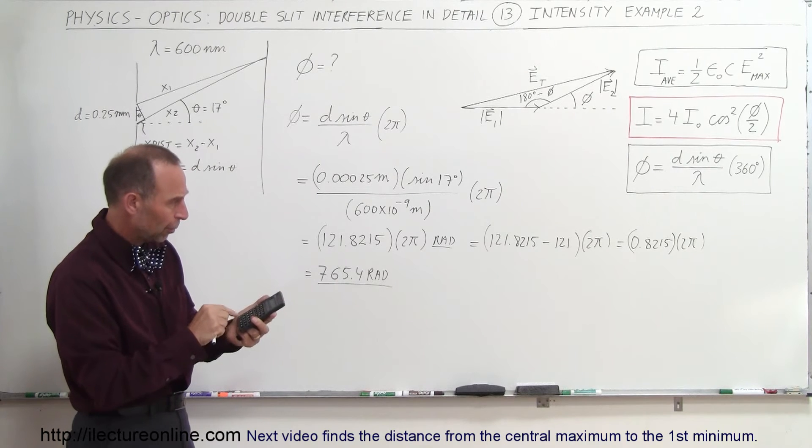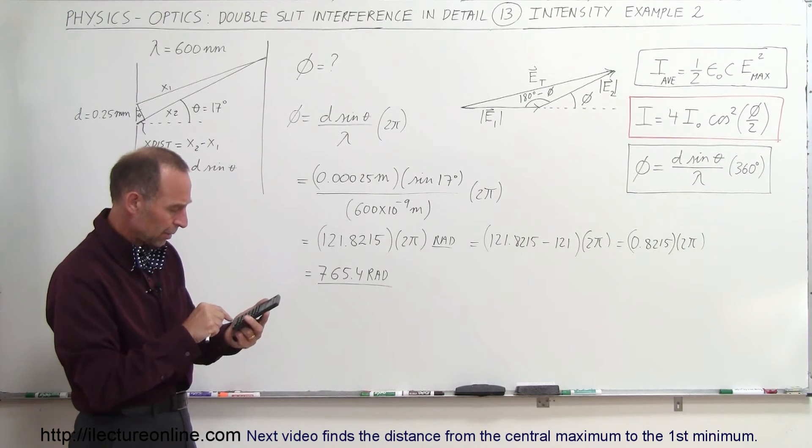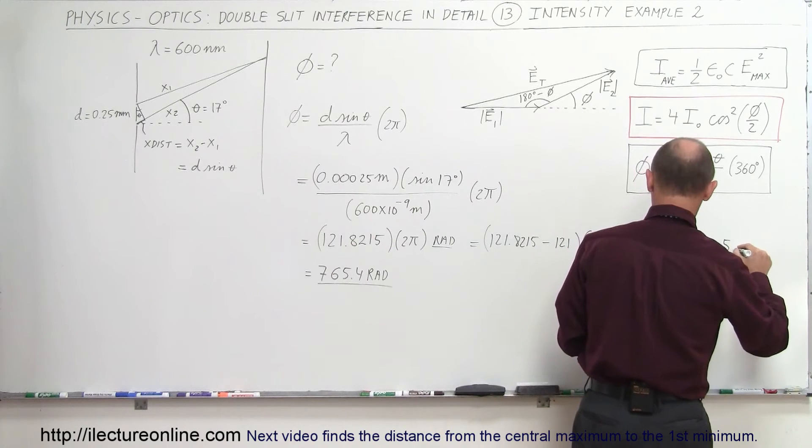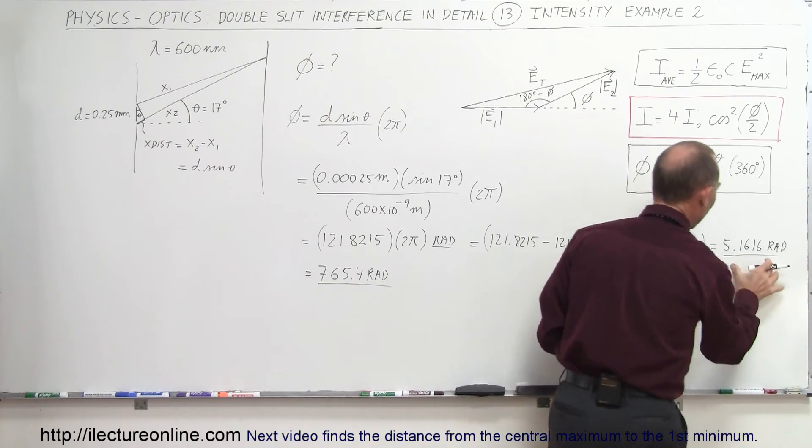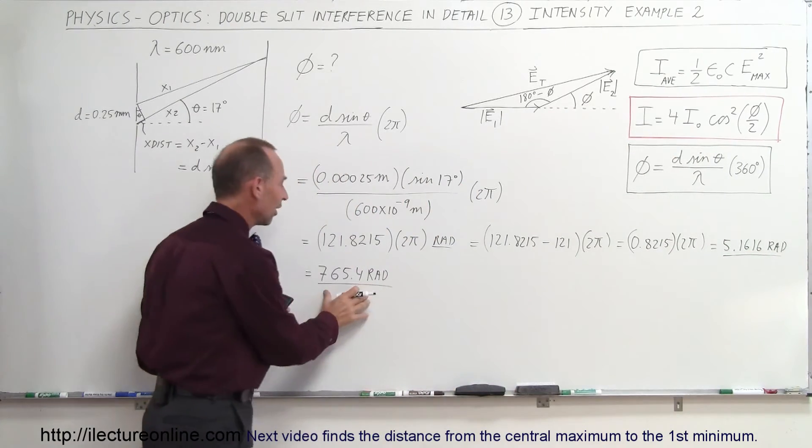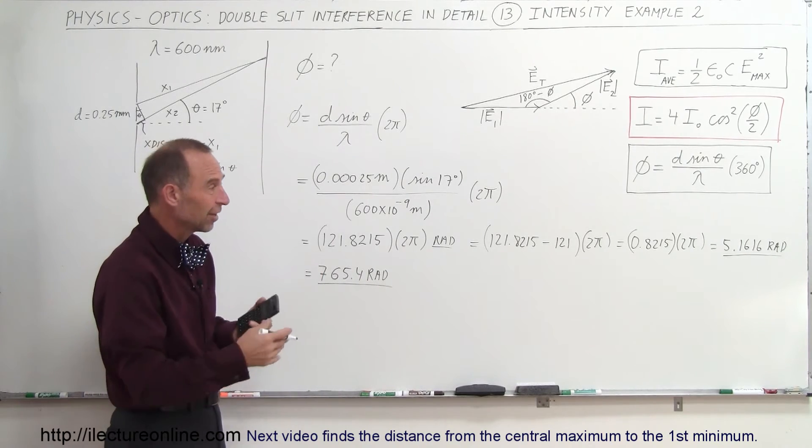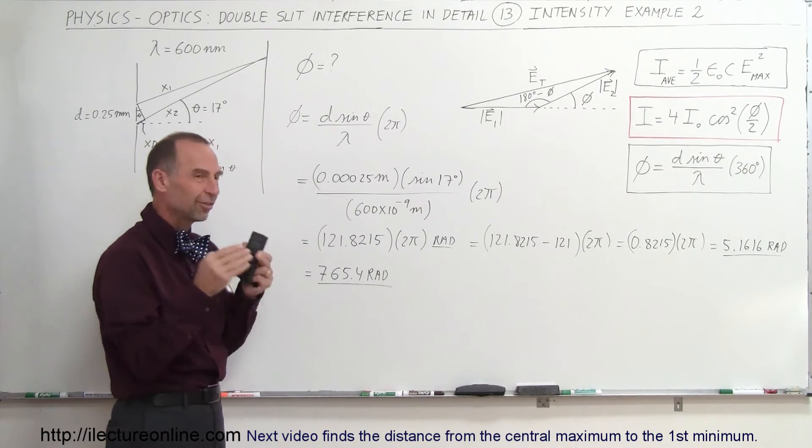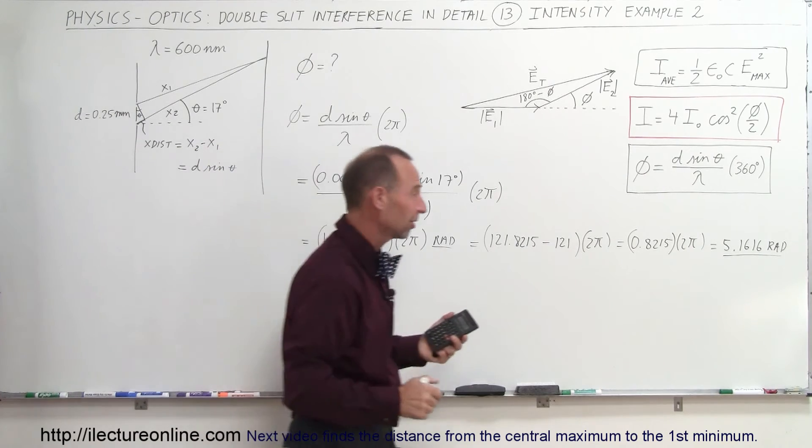So we take that number, 0.8215 times 2 times pi equals, so now we have 5.1616 radians, and this answer right here is exactly the same as this answer right there. It doesn't really matter if we have integer multiples of 2 pi radians, that always comes out to be the same result. What we're looking for is the phase difference between 0 and 2 pi radians, or the phase difference between 0 and 360 degrees.